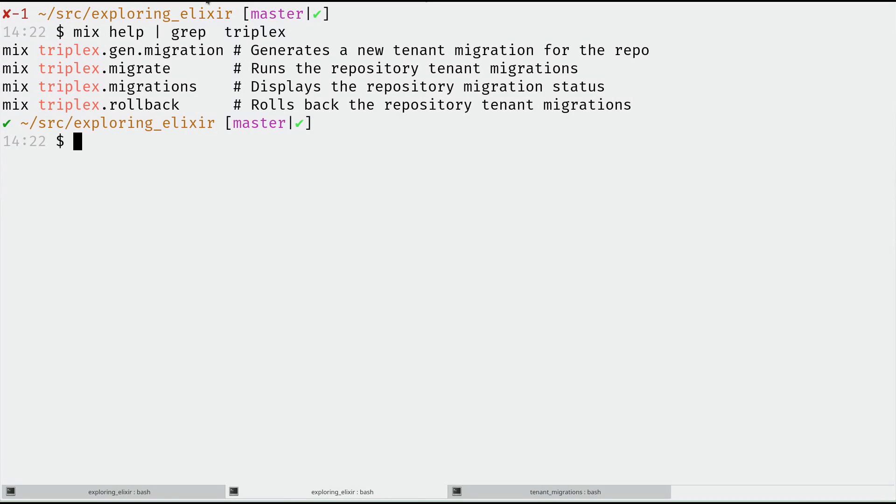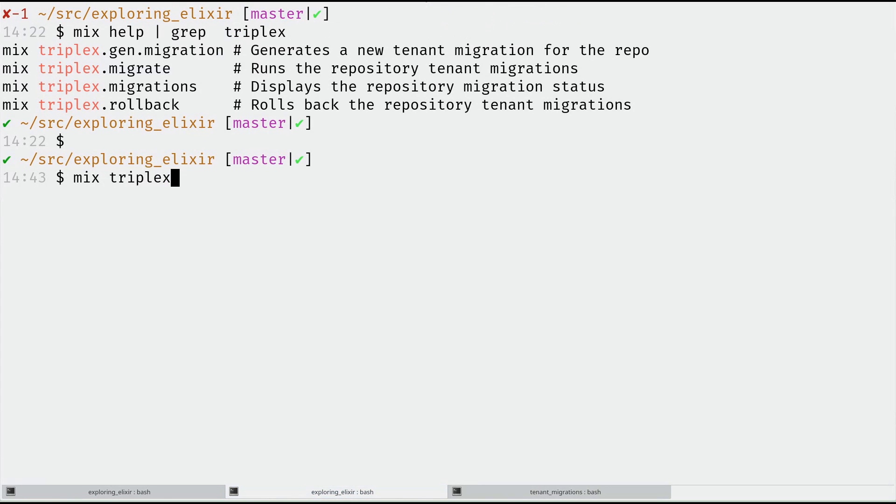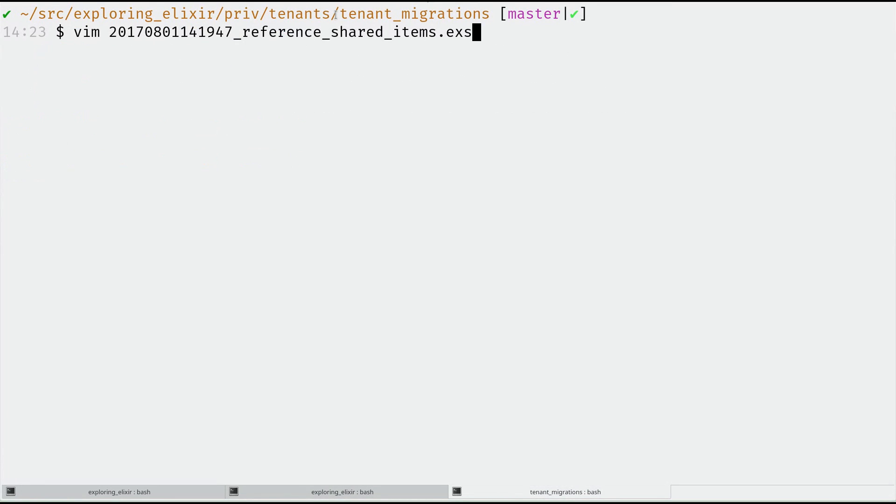We talked about multi-tenant applications and in particular I wanted to touch really briefly on how migrations work and a better way to get the prefix that we looked at in that episode. First of all, triplex as we used in that episode provides a mix plug-in that gives us this mix triplex and in there we have gen migration, migrate, migrations and rollback and these are modeled exactly after what happens in Ecto.